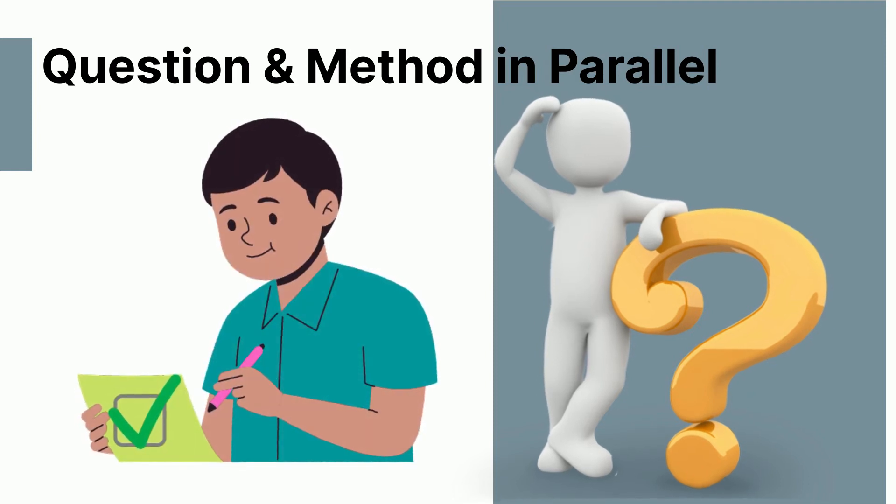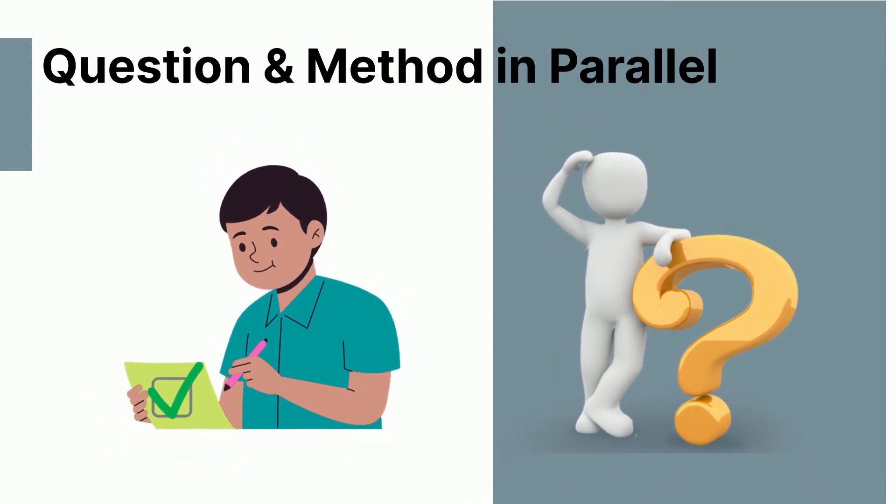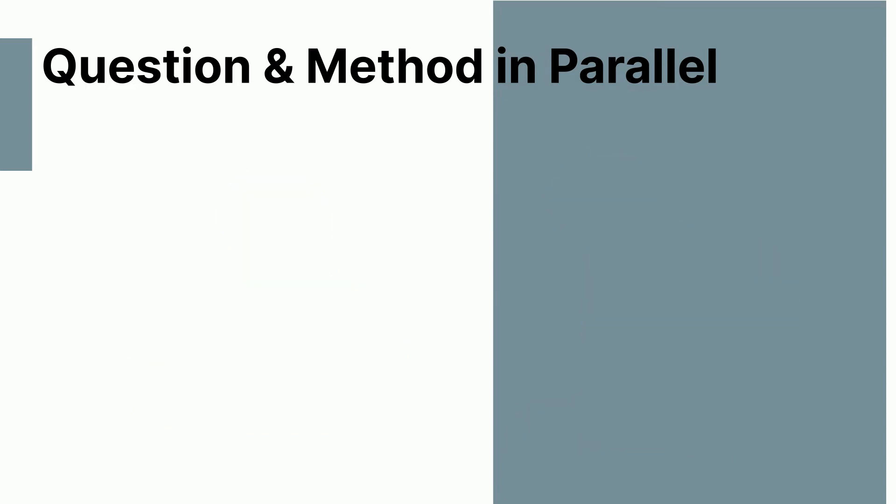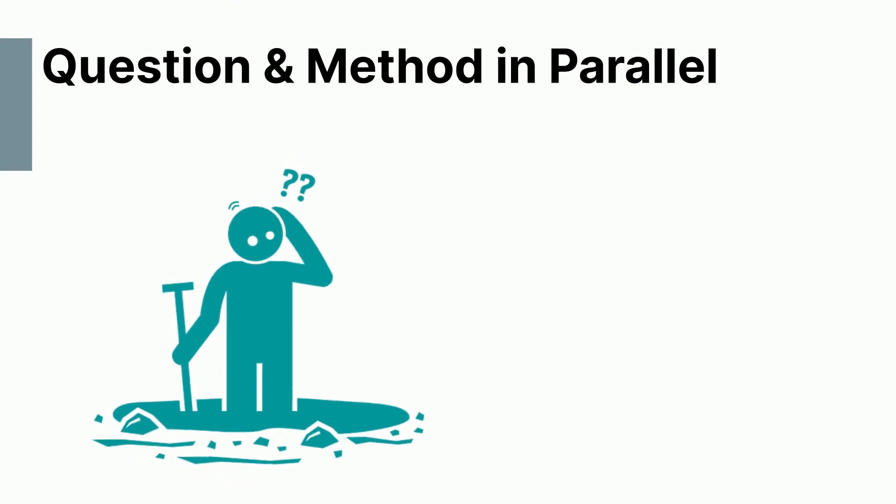Rather than thinking of a research project as a linear process, where you start with a question and end with the answer, we encourage you to think of it as more of a circular process, where you first think a little bit about your research question. And then when you have a question that could be interesting, you can think a little bit about methodology and can you already answer that question.